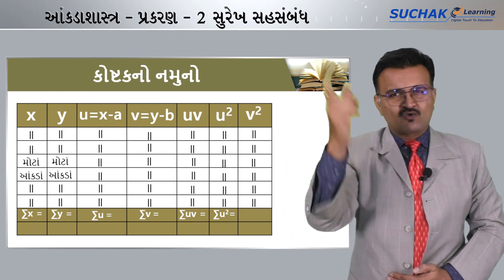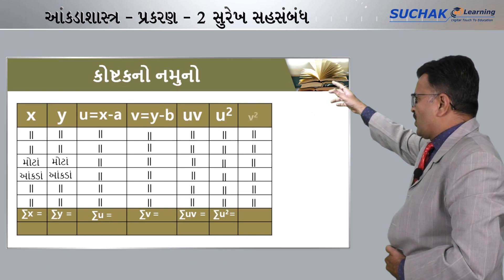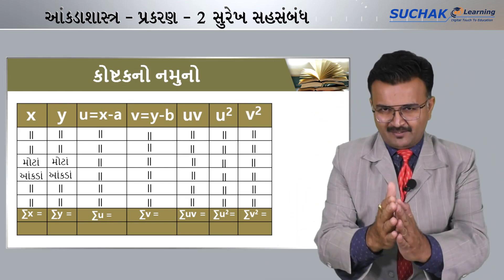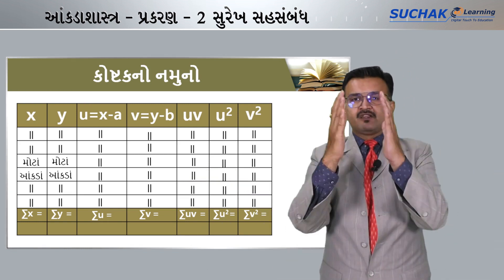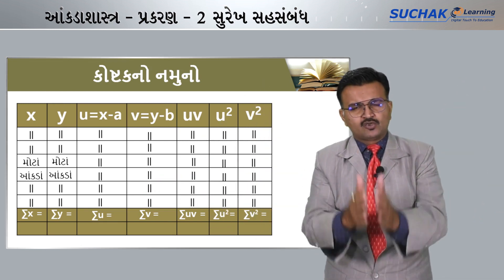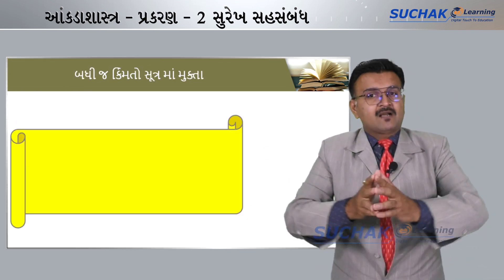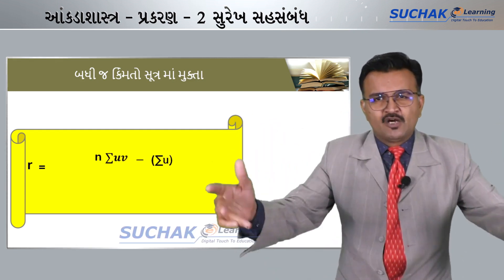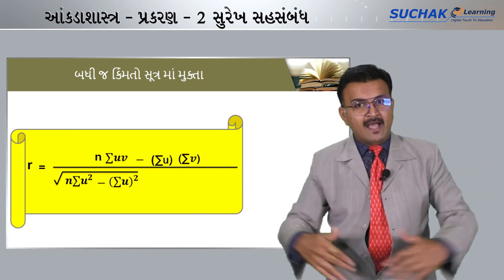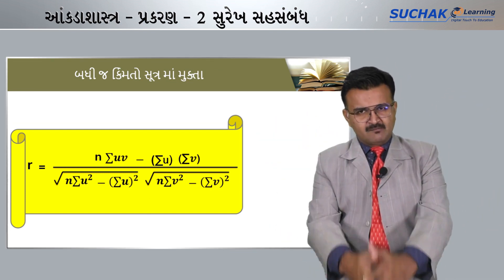We also need sigma v square and sigma u square. Once all columns are filled — sigma u square and sigma v square — the table is complete. Now we just need to put the values into the formula: r = [n·Σuv − Σu·Σv] / [√(n·Σu² − (Σu)²) · √(n·Σv² − (Σv)²)]. Put these values into the formula.